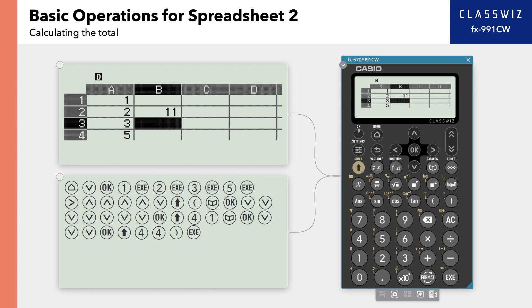If you change the value of A3 to 6, the total in B2 also changes.